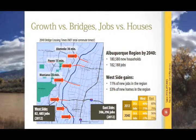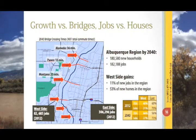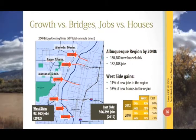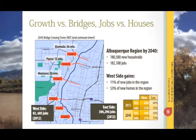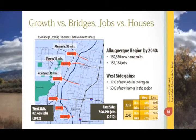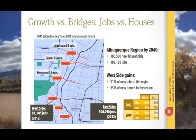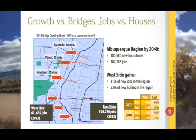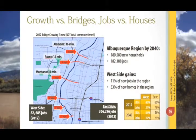One of the biggest challenges our region faces is the imbalance of jobs and housing west of the Rio Grande. Although the Albuquerque region is expected to grow in both households and jobs, very few jobs will be located on the west side. Careful planning and incentives will be needed to improve the balance of jobs and housing west of the river, which will help decrease congestion on river crossings expected to worsen over time.